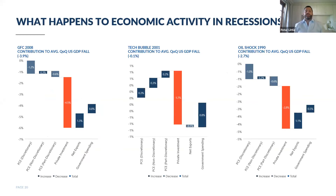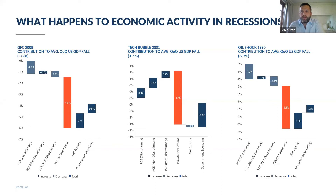Looking at what typically happens in recessions — this chart covers the last three US recessions: the Global Financial Crisis in 2008, the tech bubble from 2001, and the oil shock in the early 90s. The bars represent the contribution of each component of economic activity to the declines. The key takeaway is the highlighted red bar in each chart: private investment is significantly the biggest impact in all three recessions. Despite making up only about 20% of economic activity, the sharp drop in private investment tends to be the biggest source of pain, with discretionary spending adding further pain but not nearly as significantly.